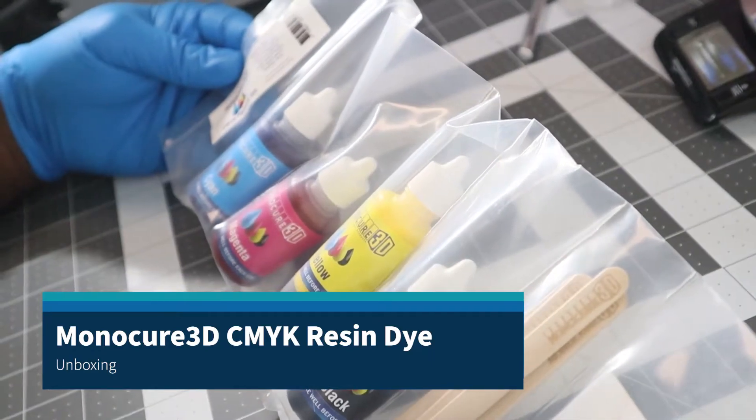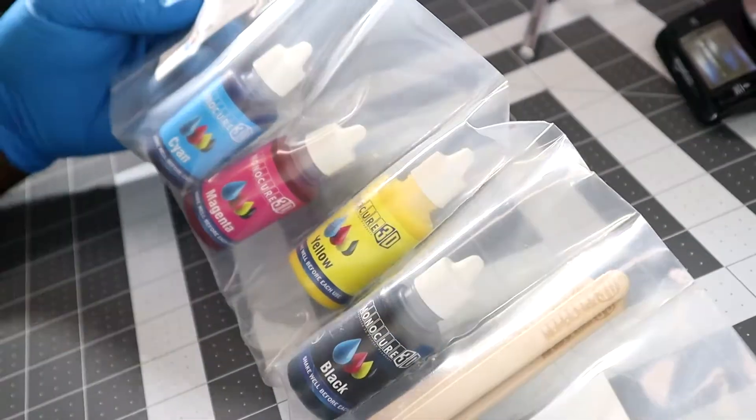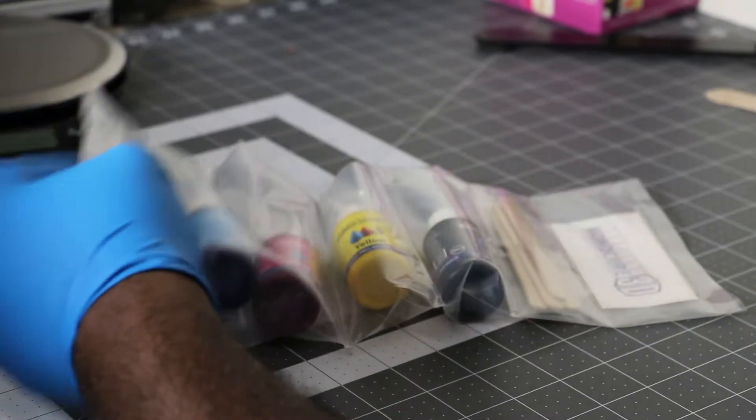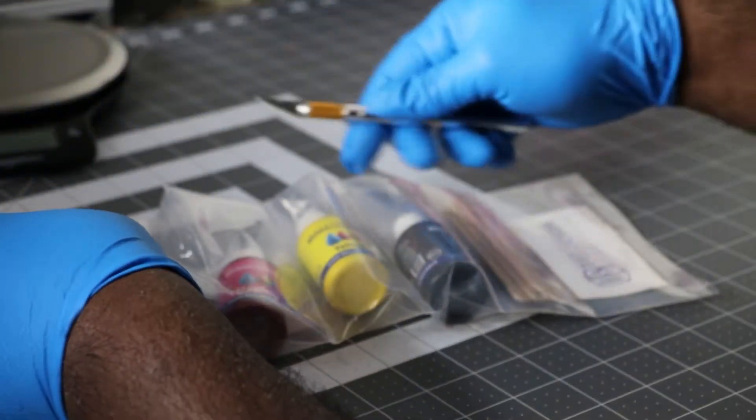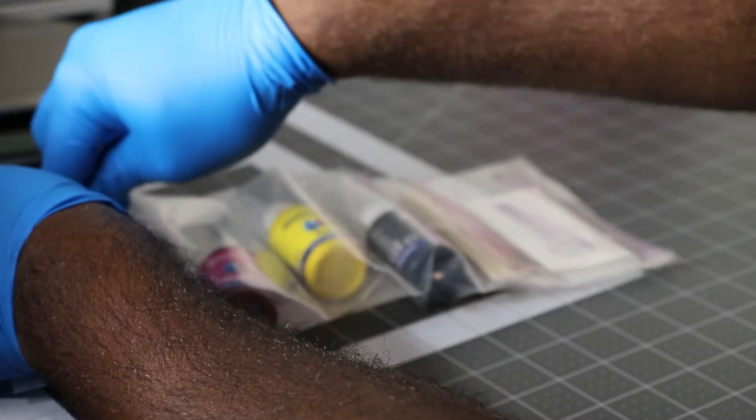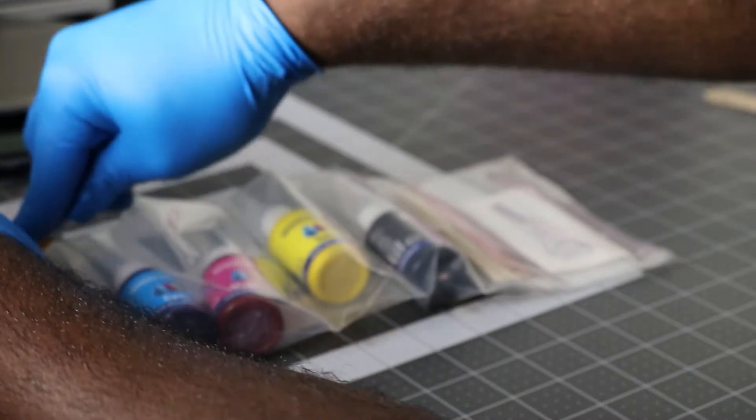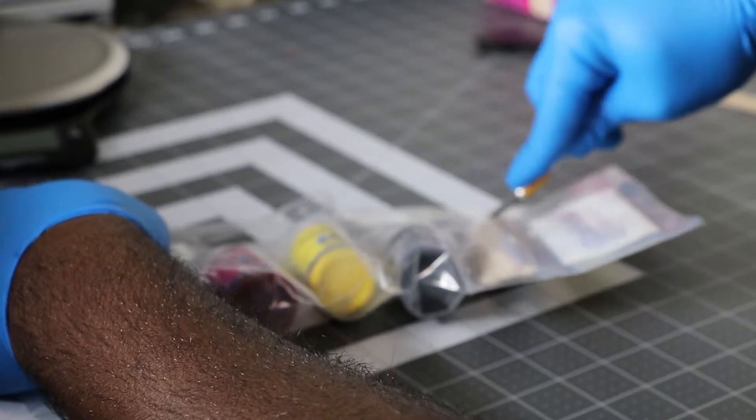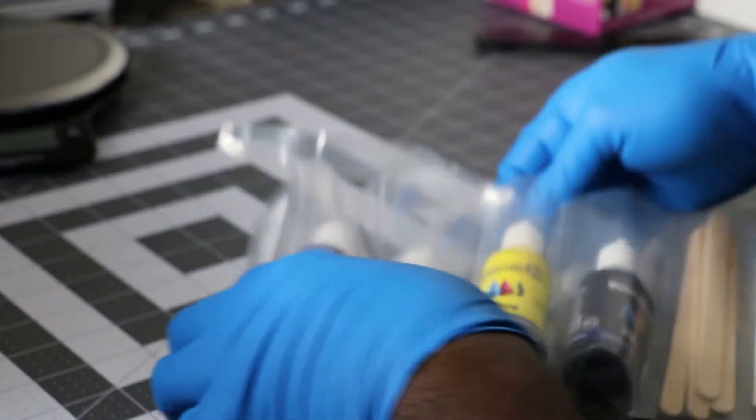Today we're taking a look at Monocure 3D CMYK resin dye kit. This is a special dye that you add to either clear or white resin to give it a custom color. Because they don't make 3D printing resins in every color you could possibly think of, there are only a few, so this is where this kit comes in.